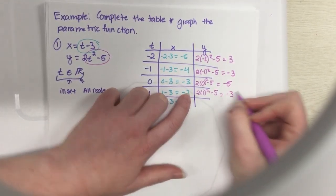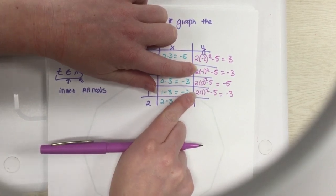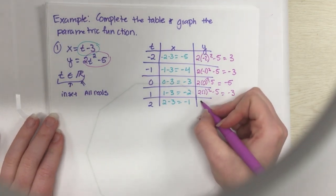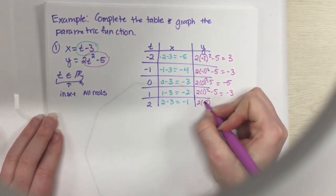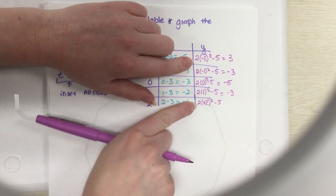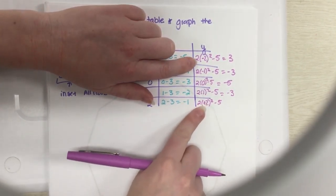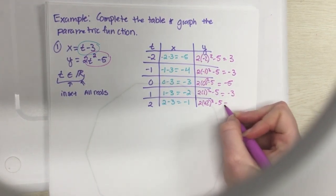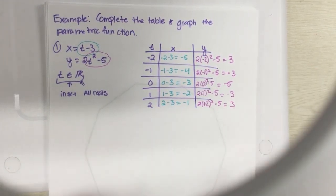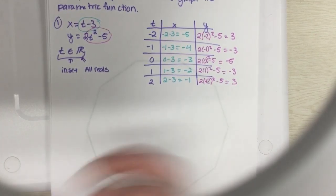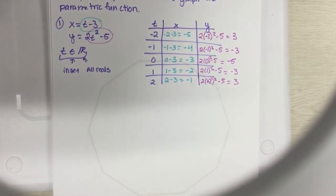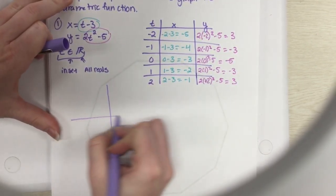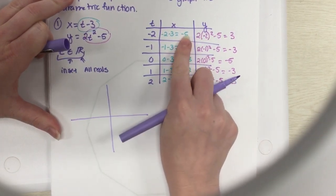We're going to keep going. 2 times 1 squared minus 5. Well, 1 squared is 1 times 2 minus 5 is going to be back to negative 3, because remember these two end up being the same - negative 1 squared and 1 squared is the same thing. We're going to plug in positive 2. Positive 2 squared minus 5, that's going to be the same as the negative 2, because positive 2 and negative 2 squared is the same thing. It's 4, 4 times 2 is 8, and 8 minus 5 is positive 3. Alright, so we have our two sets of values.